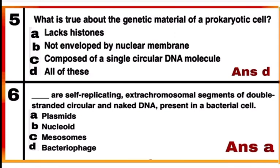Question 6: Blank are self-replicating extra-chromosomal segments of double-stranded circular naked DNA present in a bacterial cell. The answer is option A — plasmids. Plasmids are self-replicating extra-chromosomal segments present in a bacterial cell.